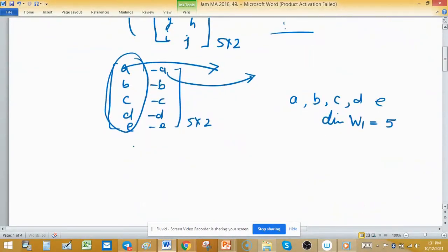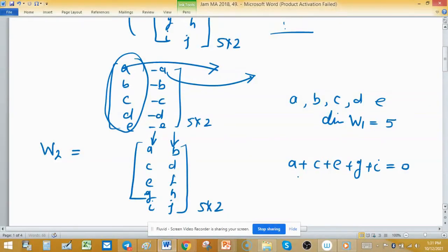Now come to W2. W2 is same 5×2 matrices: A, B, C, D, E, F, G, H, I, J. This is again 5×2 matrices and the property is that column sum is 0. To make column sum 0, so A plus C plus E plus G plus I equals 0. From this one I can write I equals negative of A plus C plus E plus G plus I.